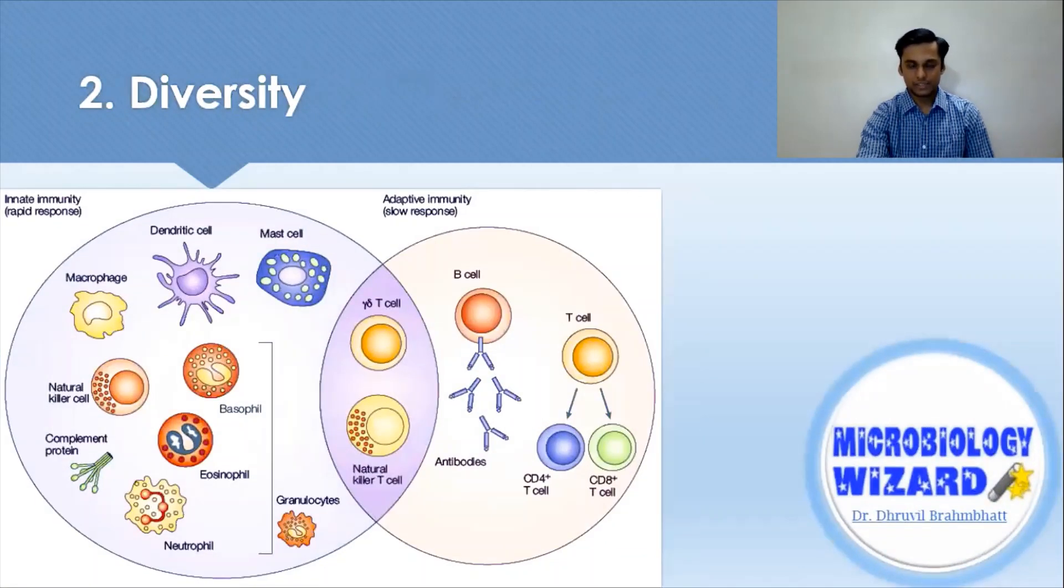Second, diversity. The adaptive immune system generates an enormous pool of molecules through B and T cells that can respond to a large variety of antigens. There are more than one million types of B cell receptors and more than 10 million types of T cell receptors.